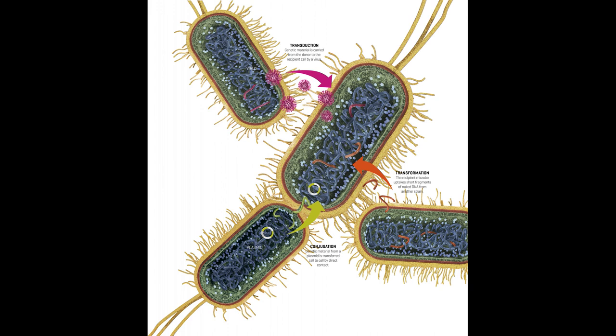In addition to transformation, the main mechanisms of HGT employed by bacteria are transduction and conjugation. Transduction involves a virus that transports DNA from one bacterium to another. In conjugation, two bacterial cells make physical contact, often with a structure called a pilus, through which they exchange DNA. Thus, while HGT can occur passively, bacteria employ mechanisms to actively promote HGT, and there are many reasons for this.